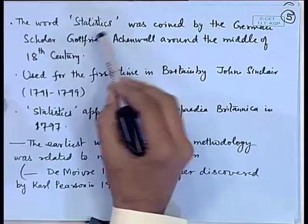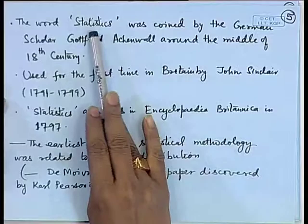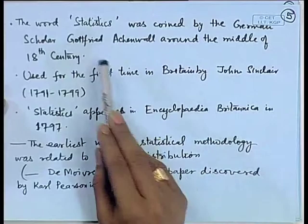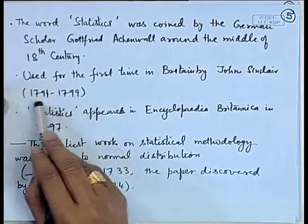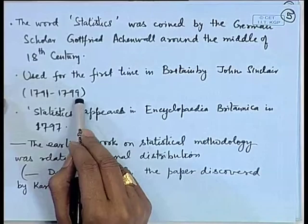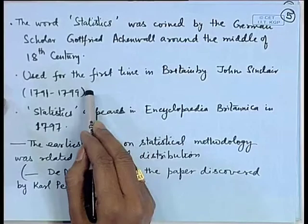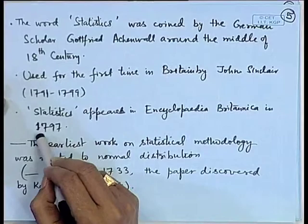It is not a new subject. However, the term statistics as used for the subject of statistics in the singular was coined by the German scholar Gottfried Aschenwald around the middle of the 18th century. It was first used in Britain by John Sinclair, who wrote a series of volumes from 1791 to 1799, giving communications between ministers from Scotland on various aspects of the data. In the year 1797, the term statistics was used in the Encyclopedia Britannica.